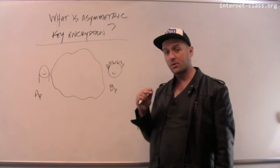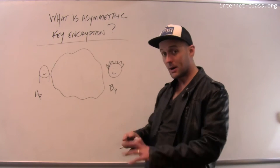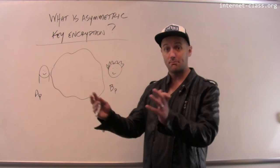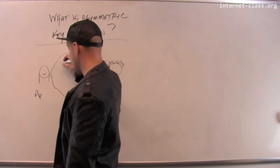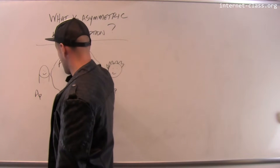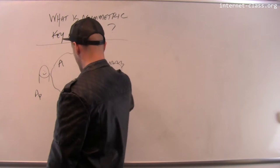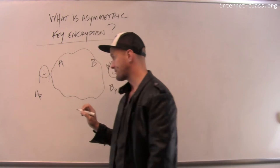There's also a separate key called the public key, which I don't have to keep private — I can publish it. Alice would put up her public key on her website or somewhere online, and Bob would put up his public key.